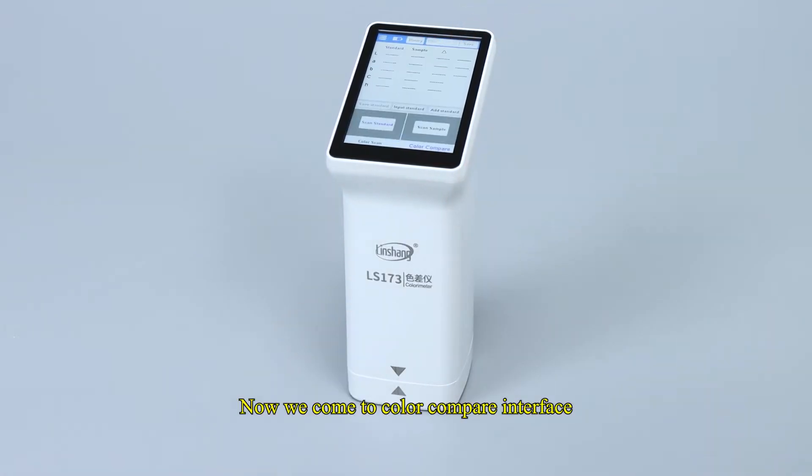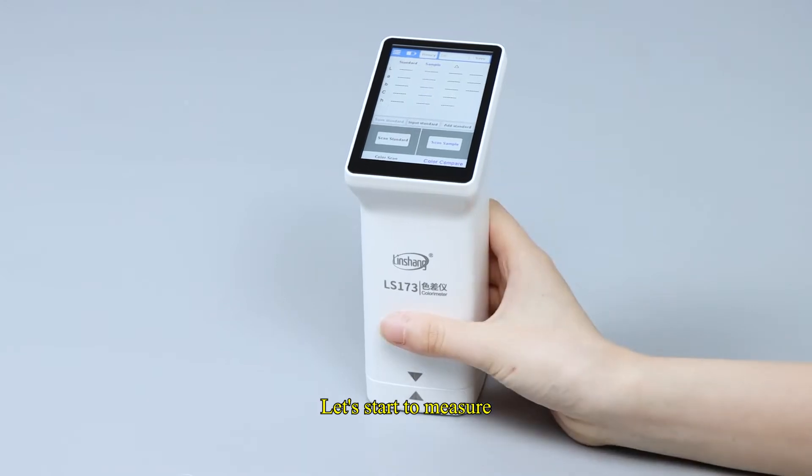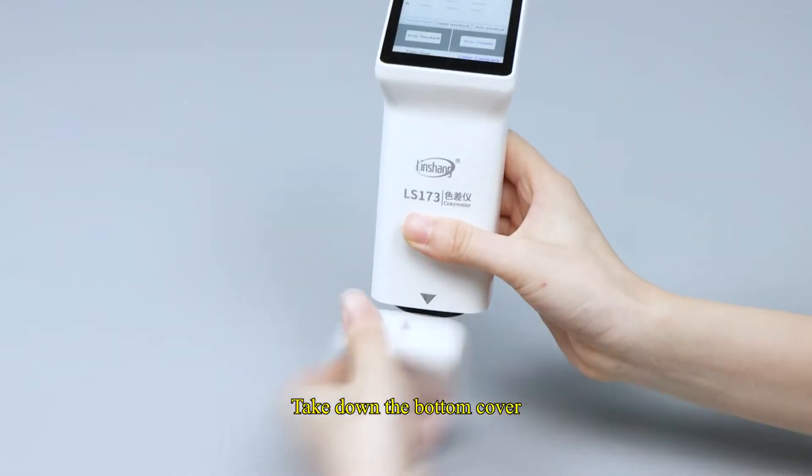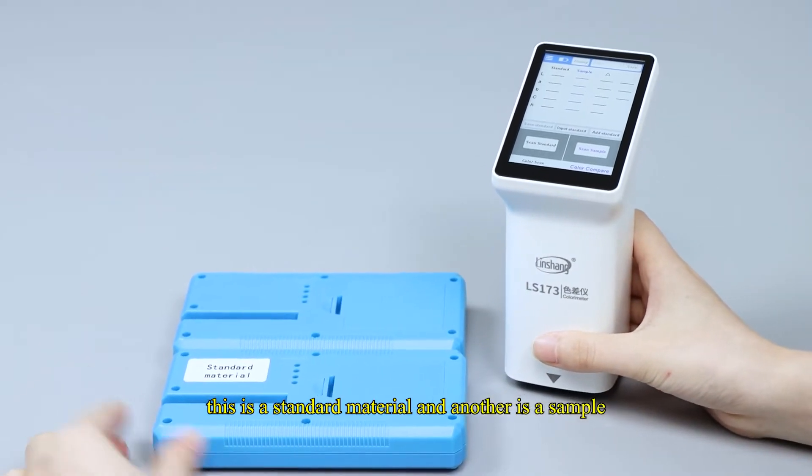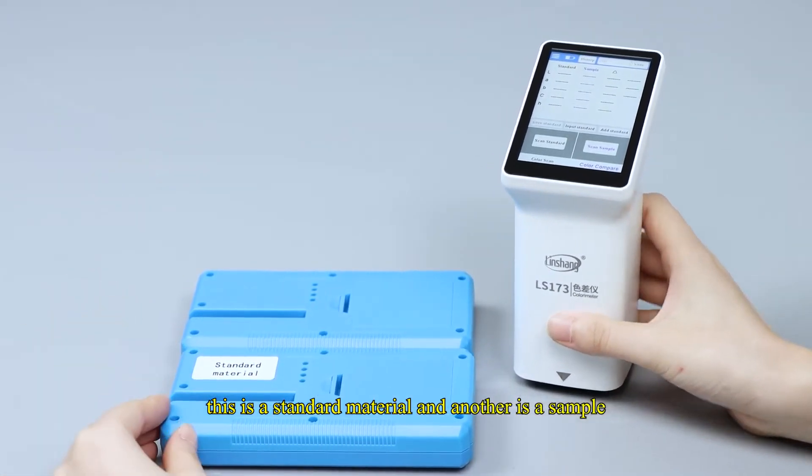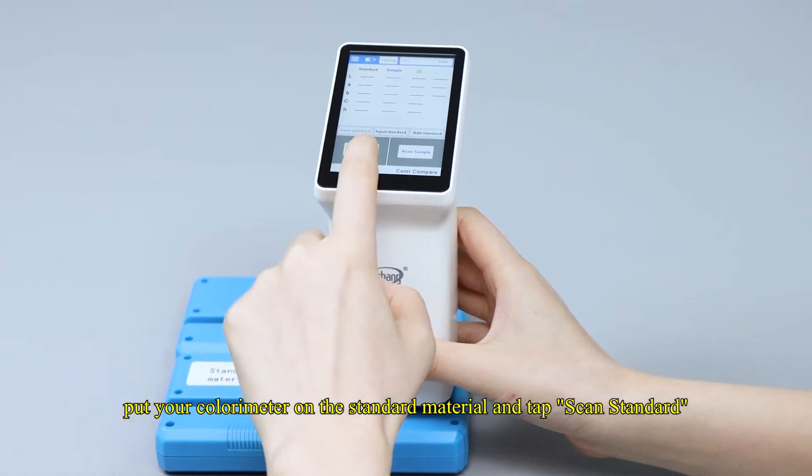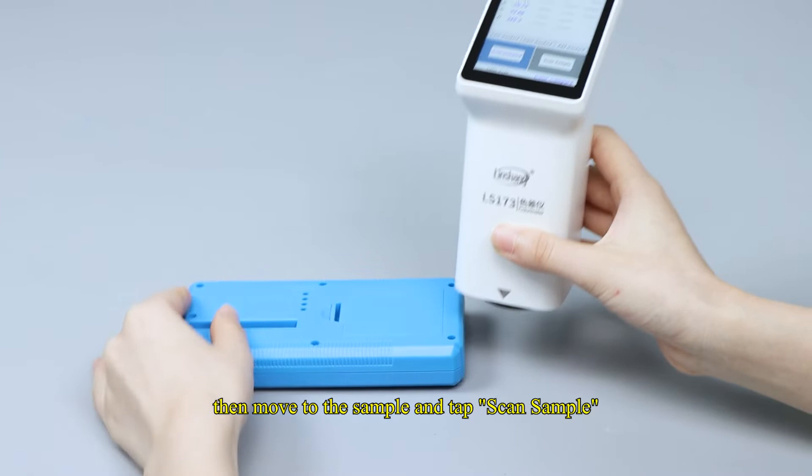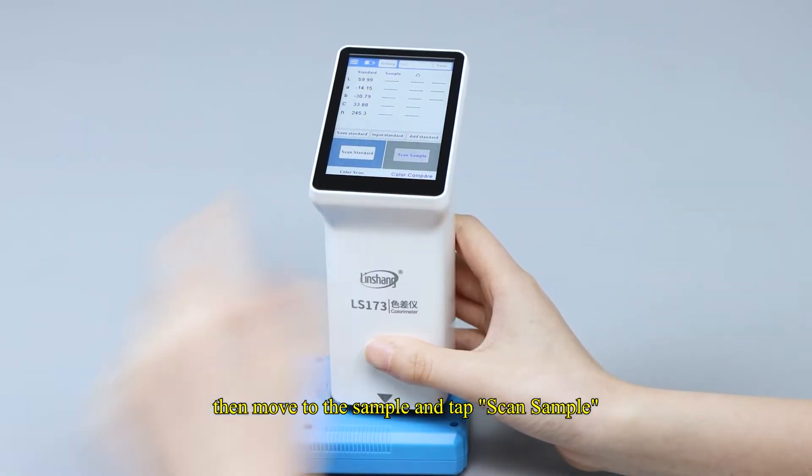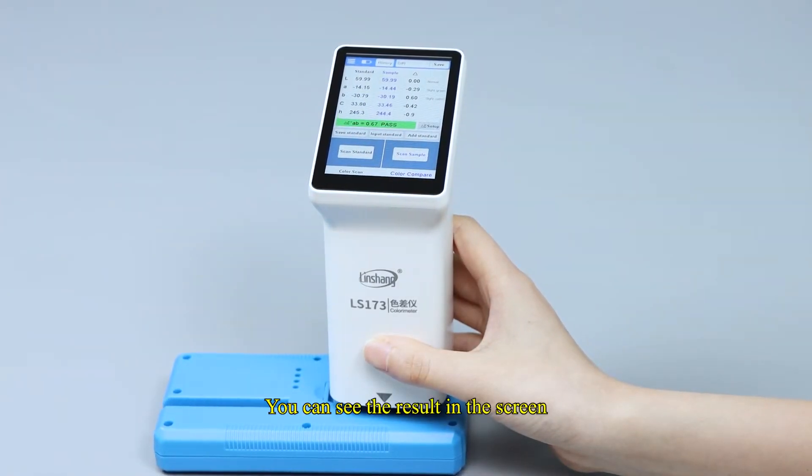Now we come to color compare interface. Let's start to measure. Take down the bottom cover. These are two plastic shells. This is a standard material and another is a sample. Put your colorimeter on the standard material and tap scan standard. Then move to the sample and tap scan sample. You can see the result in the screen.